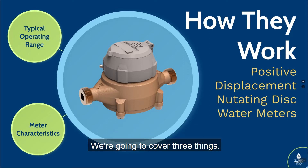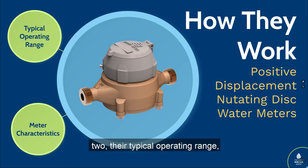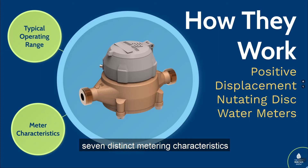We're going to cover three things. One, how they work. Two, their typical operating range. And three, we'll review seven distinct metering characteristics and see how they apply to small meters.